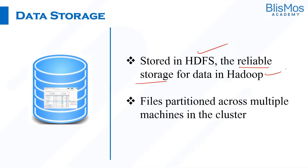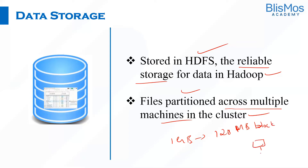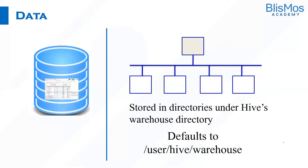When we store the data in HDFS, by default files are partitioned across multiple machines in the cluster. If you have a file size of 1 GB, that will be broken down based on a 128 MB block size, and that is distributed across different systems. When we say Hive stores the data in HDFS, HDFS is a storage layer where data is stored in file format.